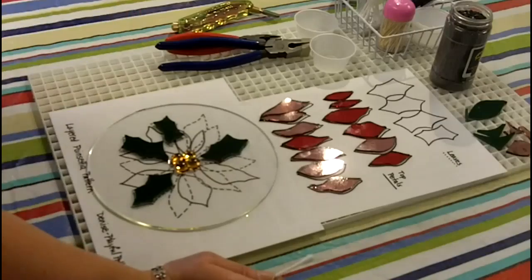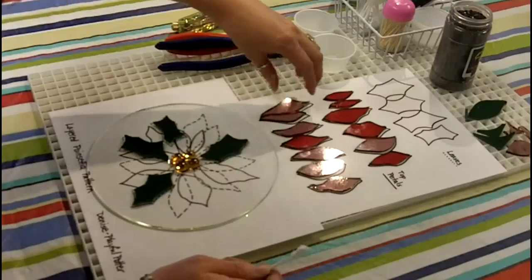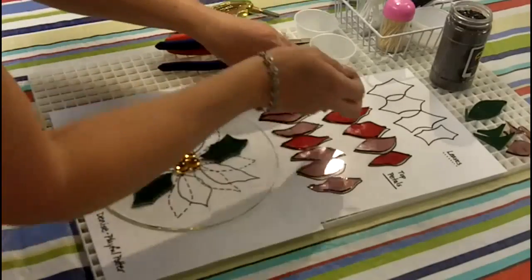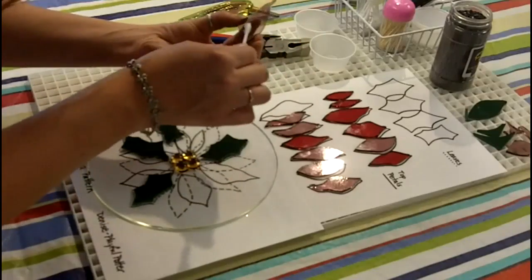All right, so what we're going to do next is we are going to lay down our base petals, which is this row here on the bottom. Bottom petals are on the bottom. These two pieces I actually just cut out right next to each other, so they actually fit together. So we're going to put those and leave those together in the pattern.